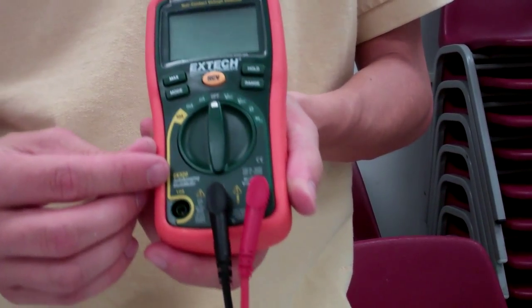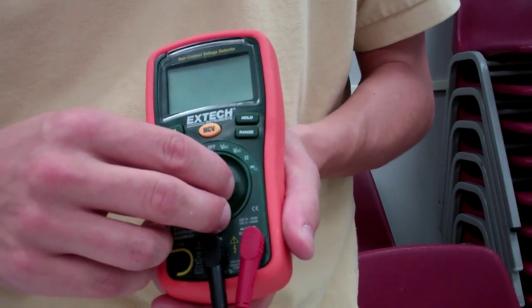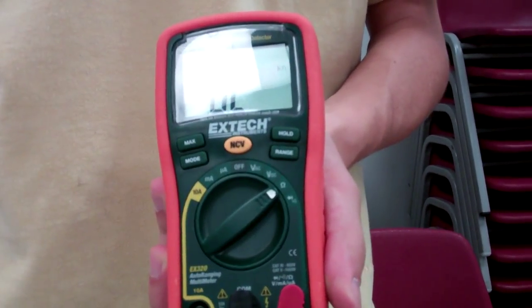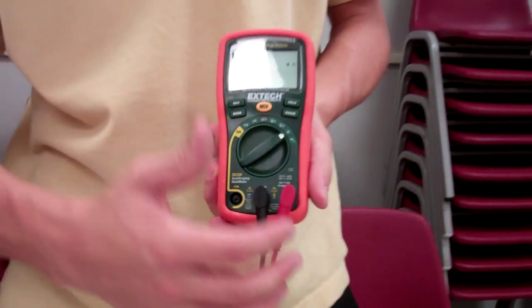Okay, so where do you flip the dial to? I'll flip it again to the omega for ohms since we're measuring resistance. Let me get a close look at that. All right, excellent.